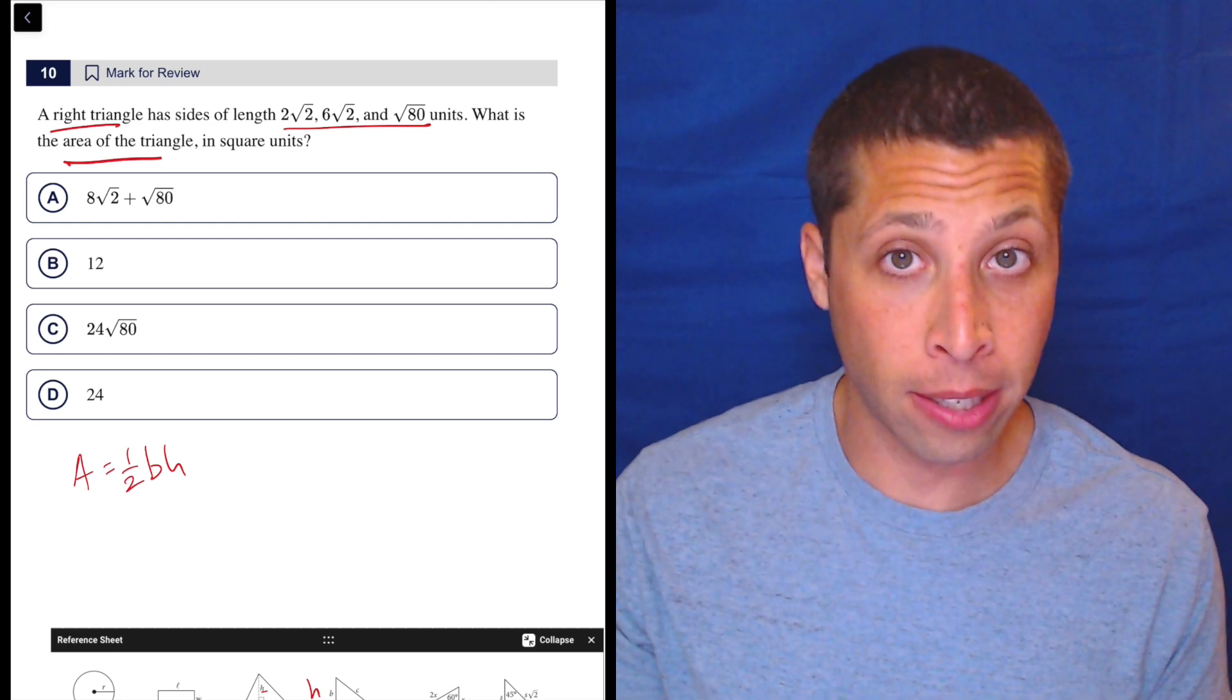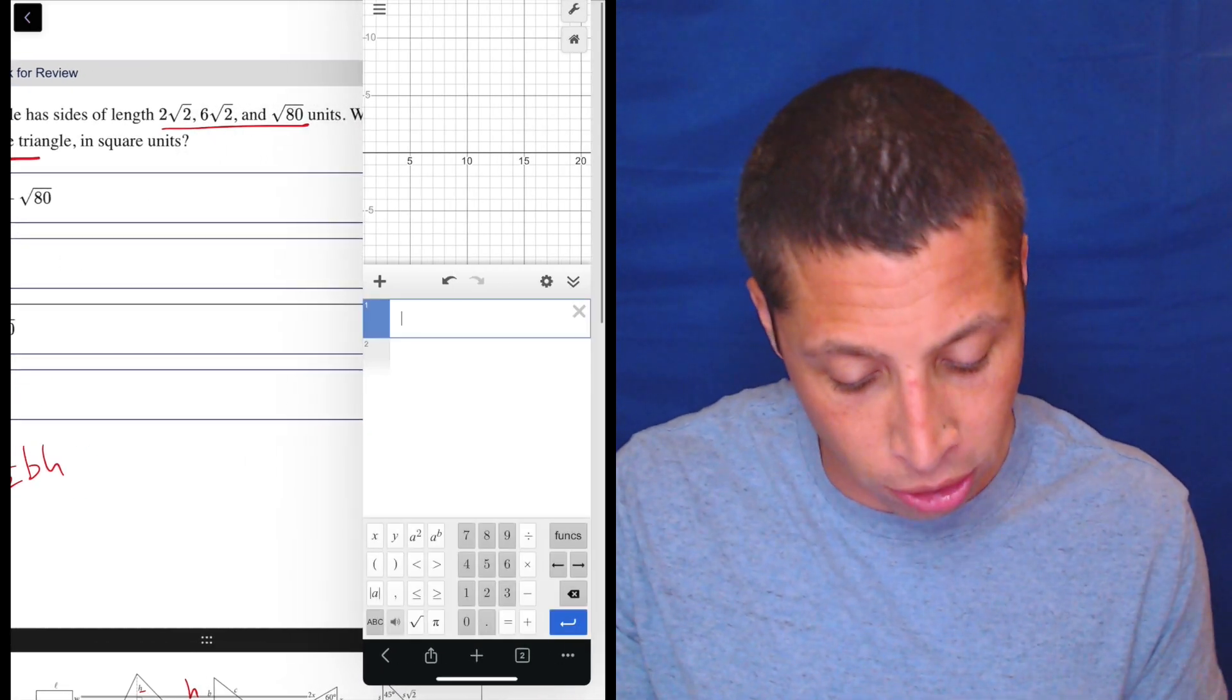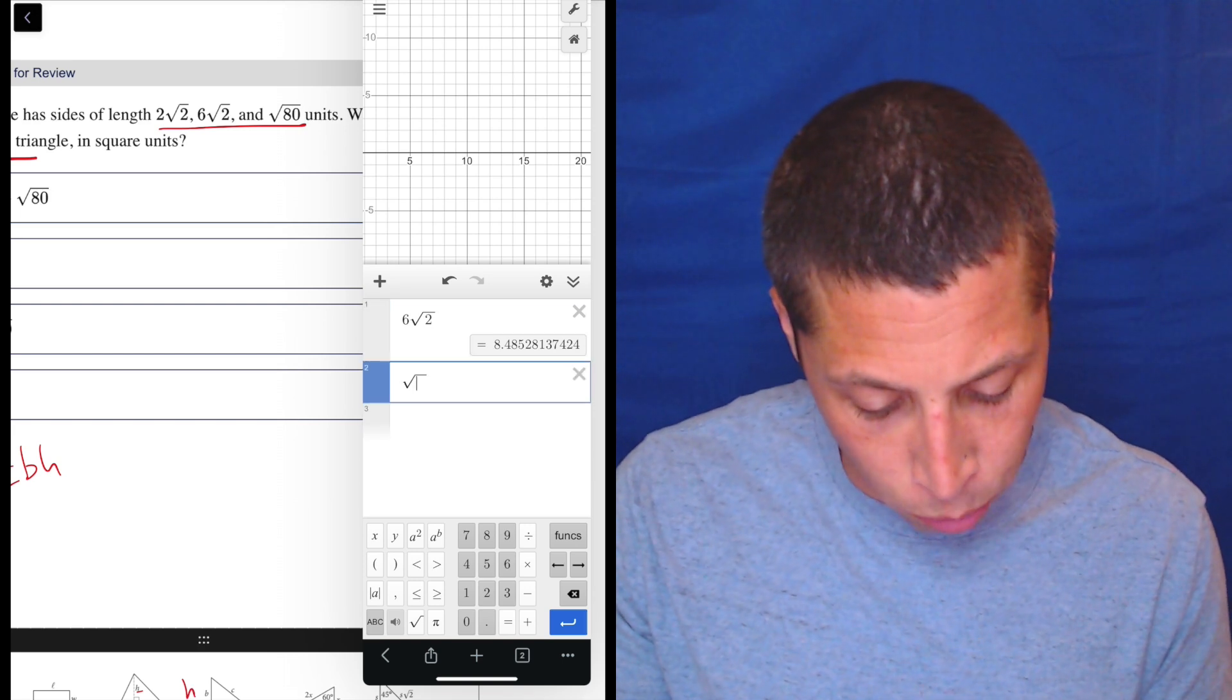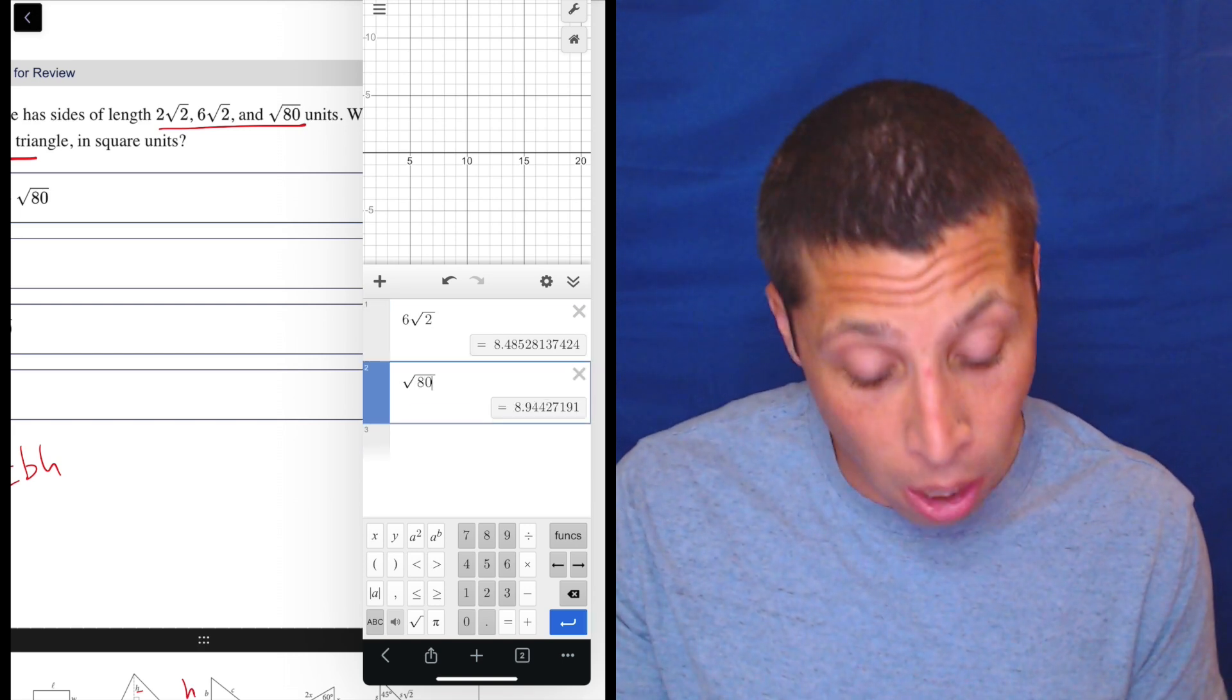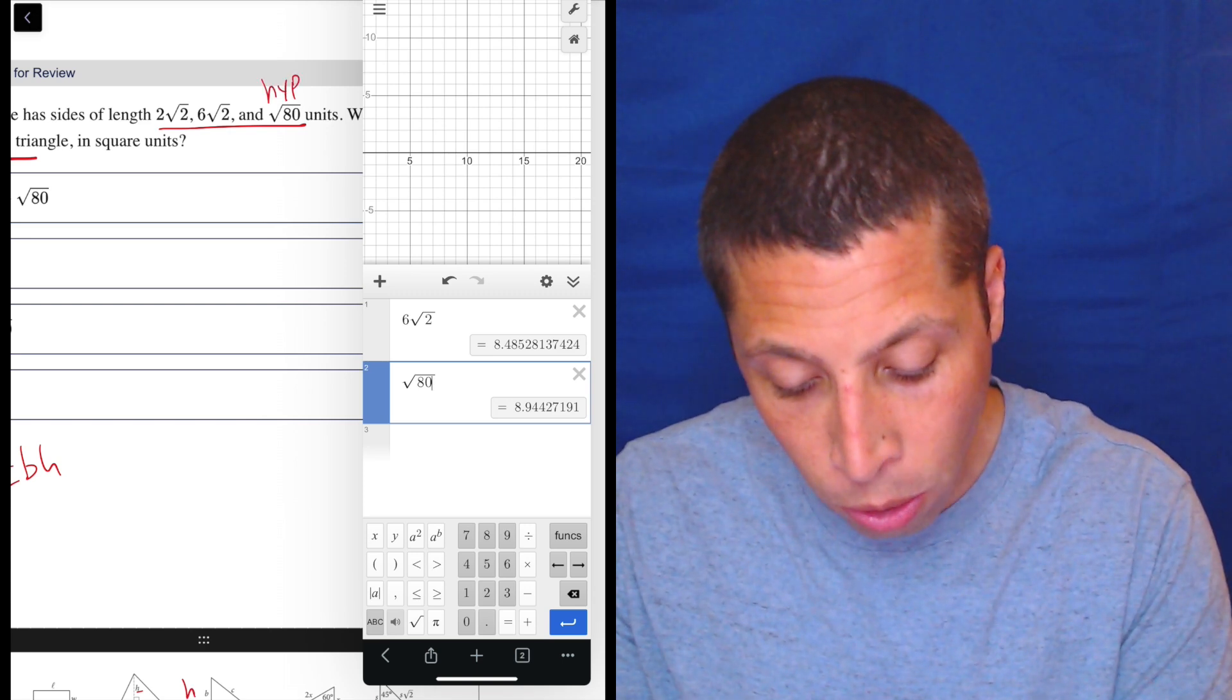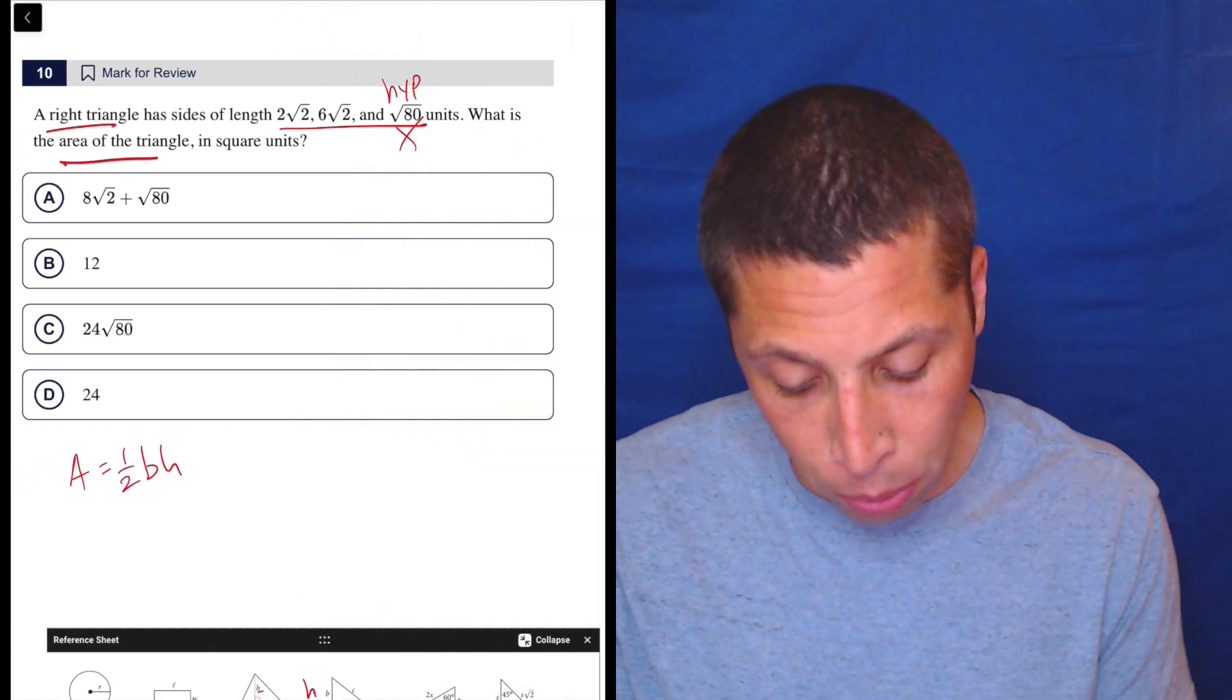So I know 2√2 is not the biggest side because we have 6√2. But let's see what that √80 is. I'm pretty sure it's bigger, but it's easy to check, right? Let's just do 6√2. That's 8 point something. And if I did the square root of 80, that's 8.9. So it's close. But radical 80 is slightly bigger, meaning that that's going to be the hypotenuse. So we don't care about it. We care about the other two. So I could draw the picture, but I think we kind of get it at this point.